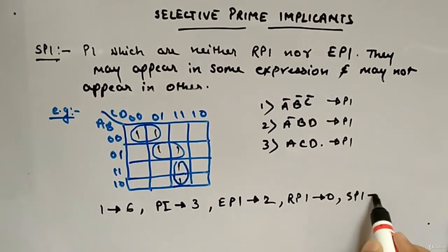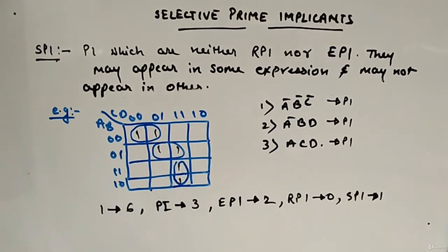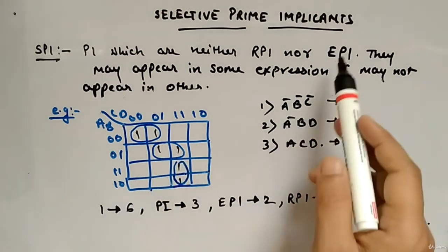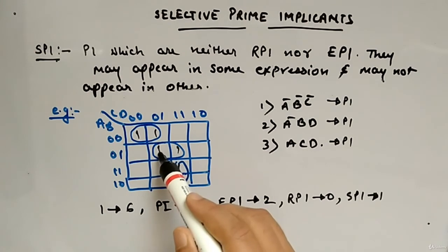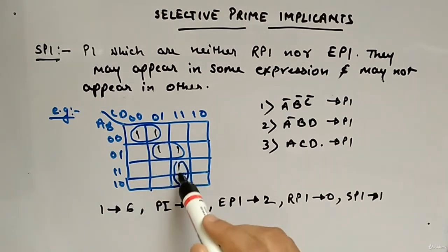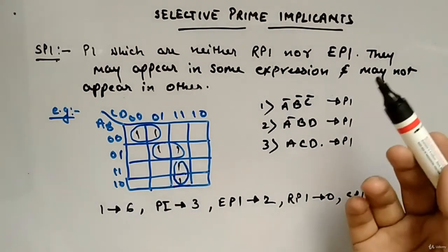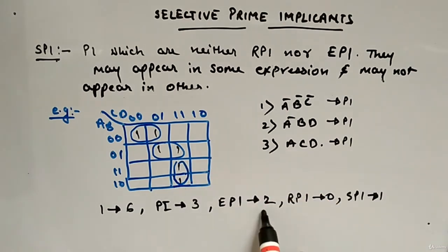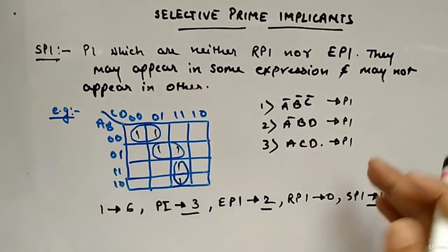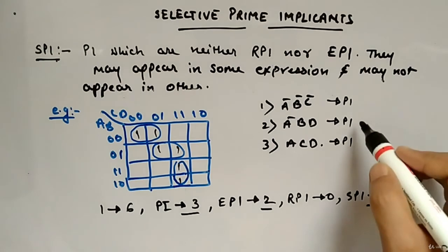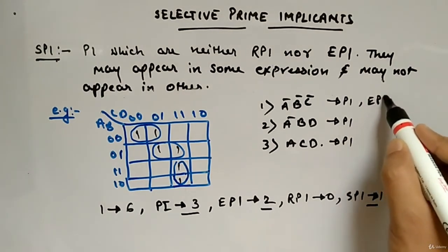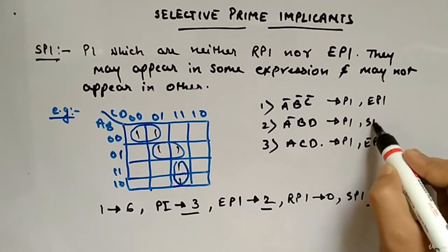What about selective prime implicants? This group will be the selective prime implicant, because each of its min terms are not a part of an essential prime implicant, and plus they have multiple options of pairing — this min term has this and this, and this min term has this and this. So that's the reason this group is selective prime implicant, not essential prime or redundant prime implicant. Total: two EPIs plus one SPI equals three total prime implicants.